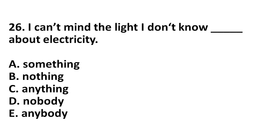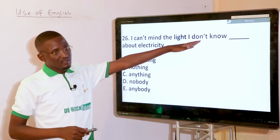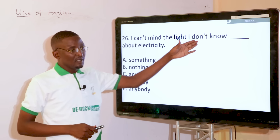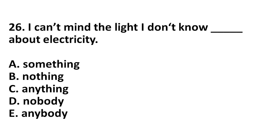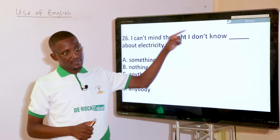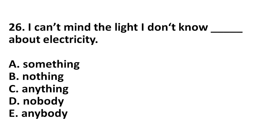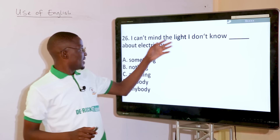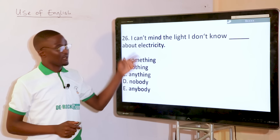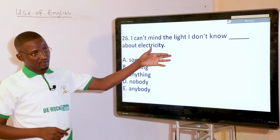I can't mind the light. I don't know dash about electricity. Having a negative item — do not — if you have not in the sentence, you should go with any. So you couldn't have no or some. When you see a negative like not or n't — a contraction of do not — the next word should be any: I don't know anything about electricity. When you see a negative item, the next selection should be any, not no or some.